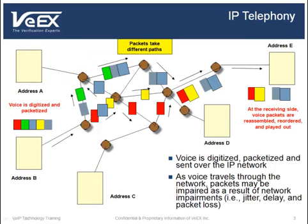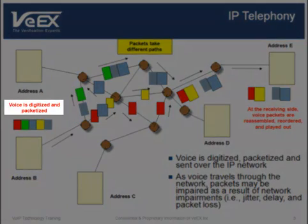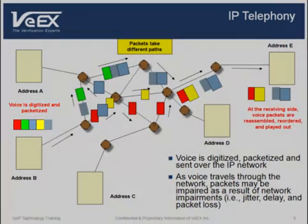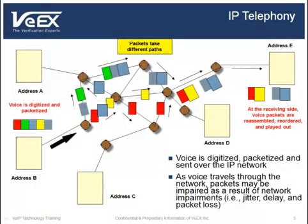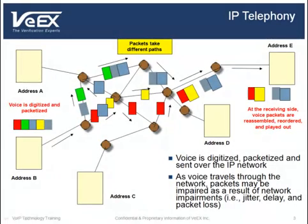VoIP technology routes phone calls over existing data or IP networks. The voice is first digitized and compressed, then encapsulated into IP packets. These packets are then transmitted over the IP network, possibly through different paths, to the final destination. Because of the lack of quality of service, or QoS, control between the source and destination, the IP packets transmitting voice are subject to the same network impairments as data packets, but the nature of a voice conversation makes it immediately noticeable to the end user.